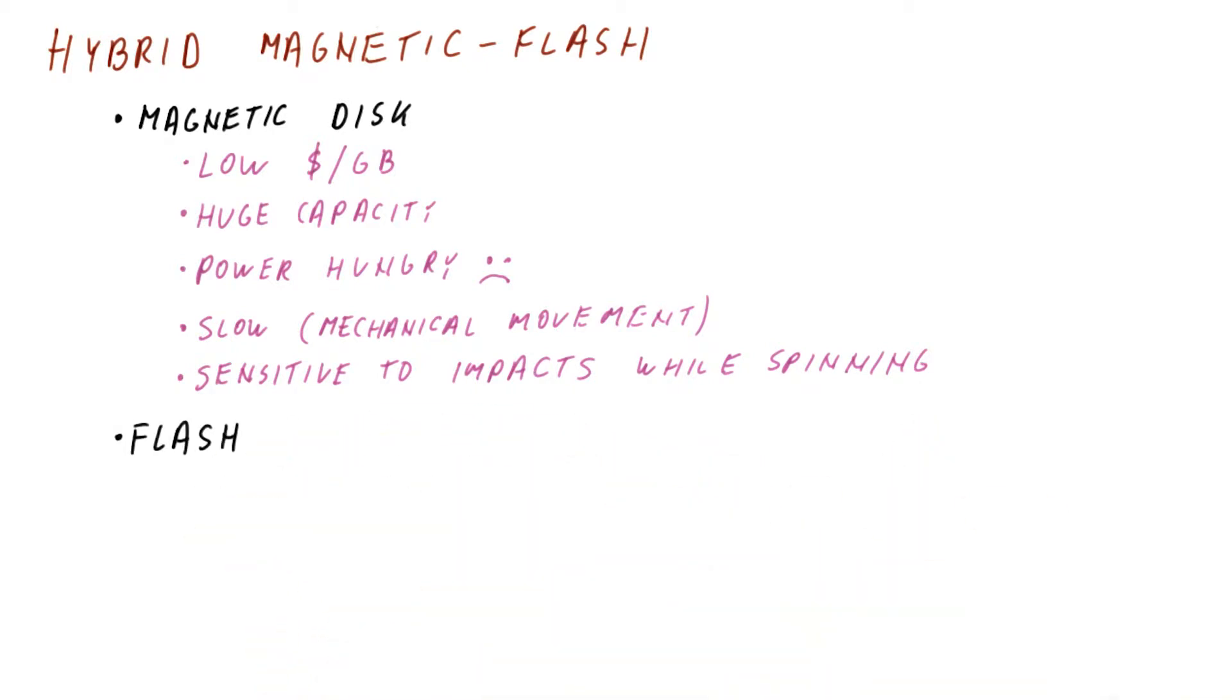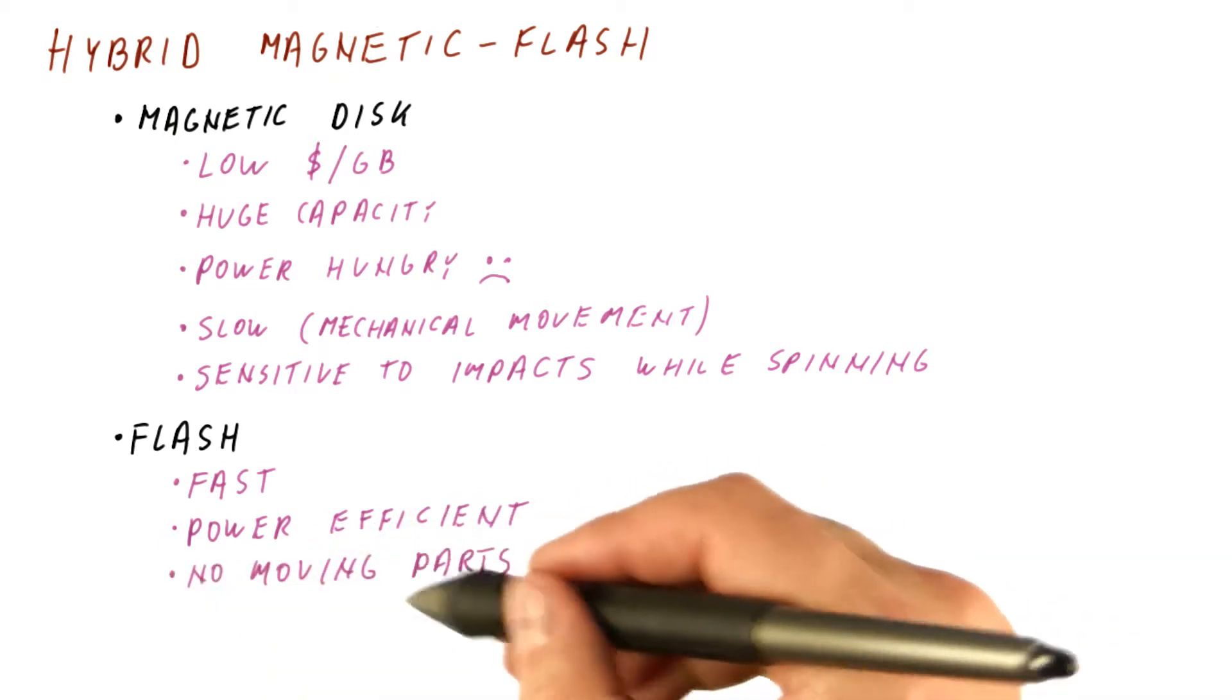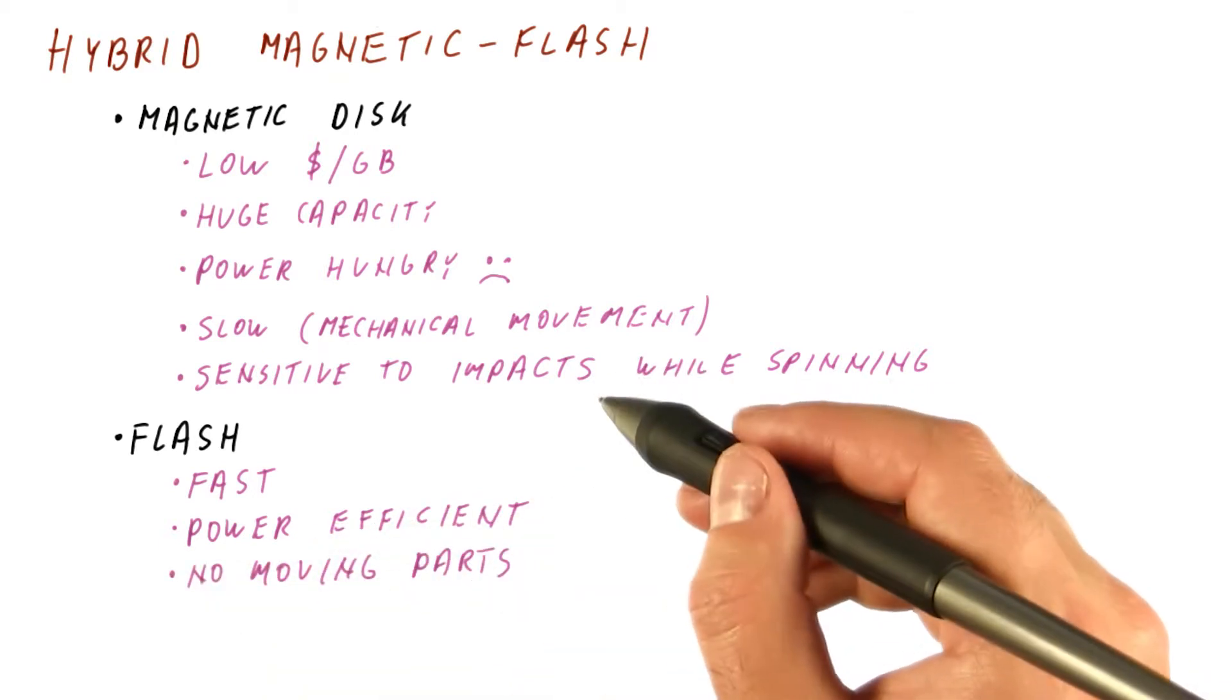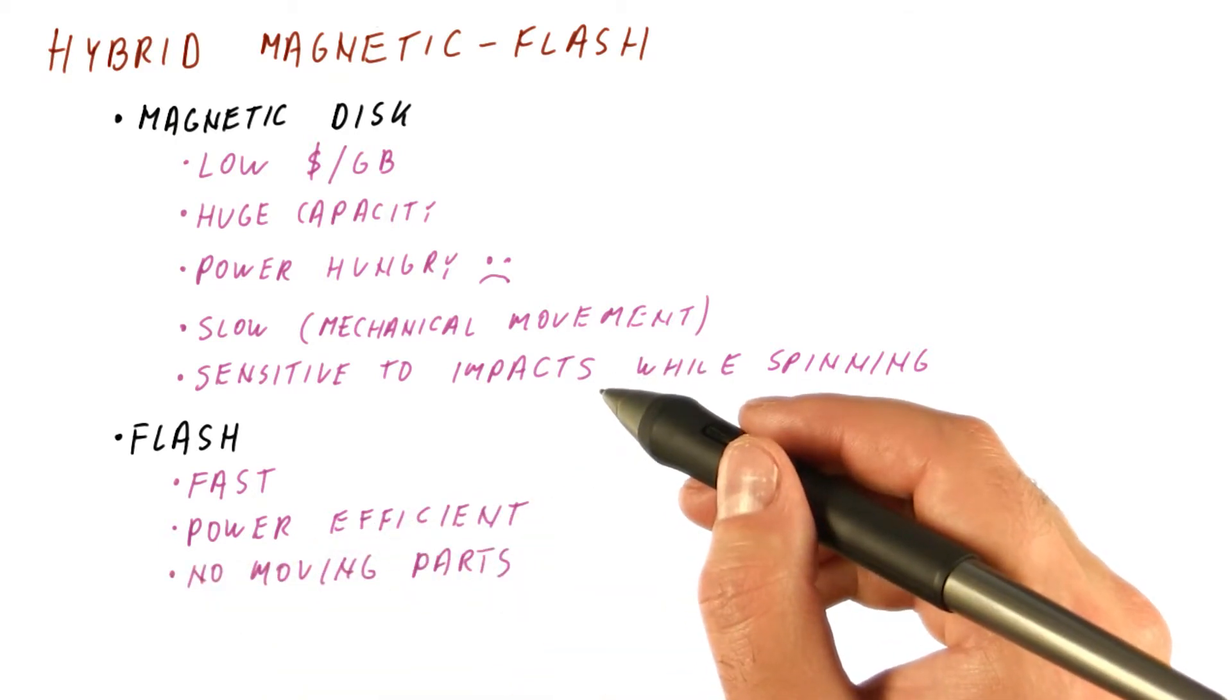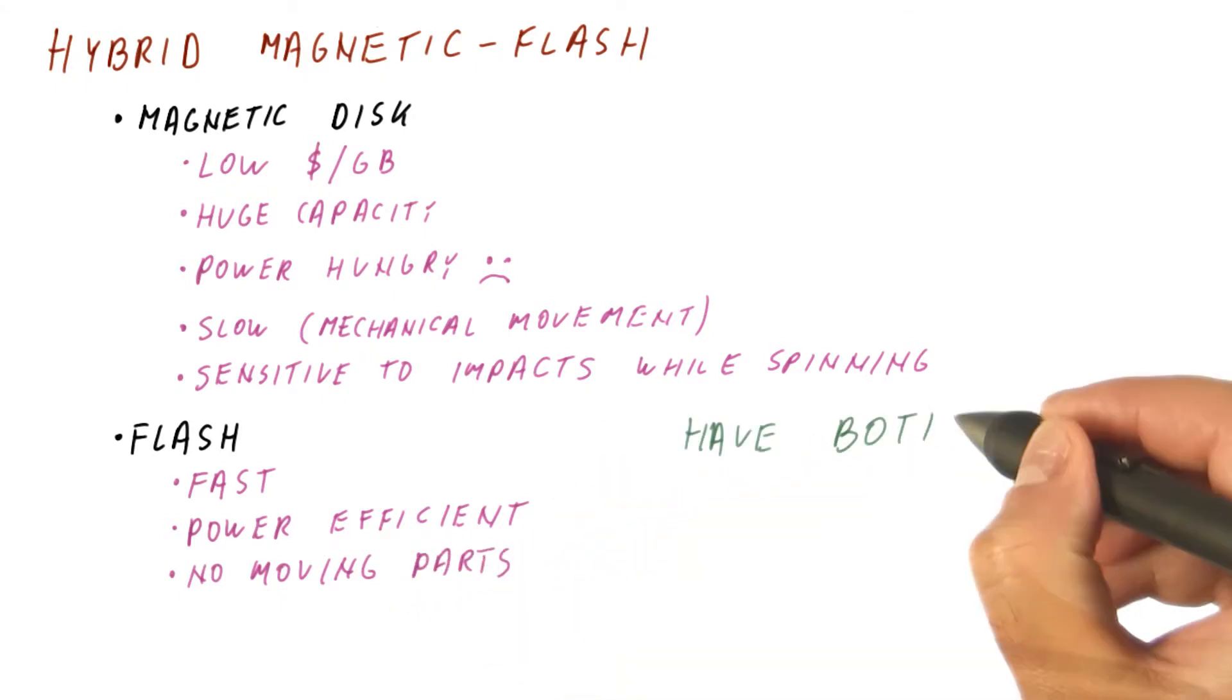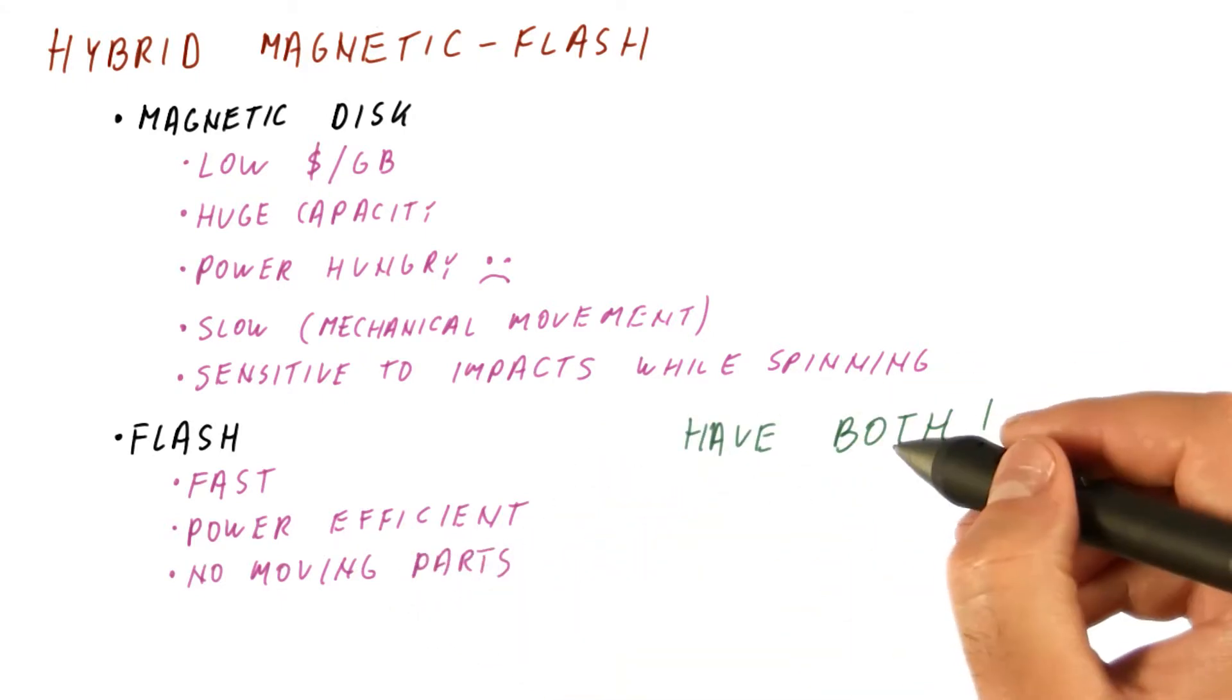Flash, on the other hand, is fast, power efficient, and has no moving parts. So if it falls down, it might get damaged, but it's very unlikely. So the idea is to have both of them.